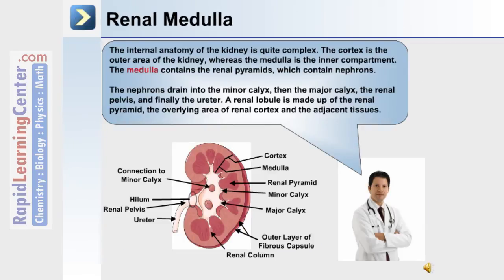The renal medulla. The internal anatomy of the kidney is quite complex. The cortex is the outer area and the medulla is the inner compartment. The medulla contains the renal pyramids, which contain the functional unit of the kidneys, the nephrons. The nephrons drain into the minor calyx, then the major calyx, the renal pelvis, and finally the ureter. A renal lobule is made up of the renal pyramid, the overlying area of renal cortex, and the adjacent tissues.